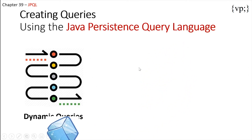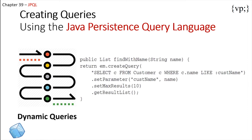Dynamic queries allow the user to specify the type of data they may be looking for. Let's take a look at this example — here we can see that the user can specify the name of the customer inside the parameter, and the JPQL code will find the results for you. This name will then be inserted directly into the customer name parameter. All this query is saying is: select from this table where the name of the customer matches the name you inputted, and the maximum results will be 10, returned in a list.